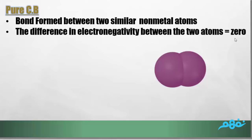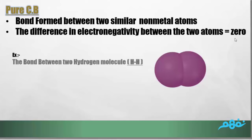The difference in electronegativities between the two atoms is zero. For example, the hydrogen molecule consists of two hydrogen atoms. Each hydrogen atom has an electronegativity of 2.1, so 2.1 minus 2.1 equals zero — that's the formation of the hydrogen molecule.